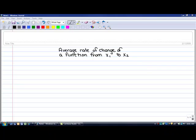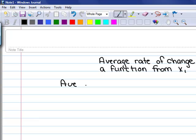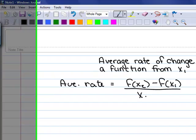This lesson is on the average rate of change of a function from x sub 1 to x sub 2. The average rate formula is really the slope formula, and it's f of x sub 2 minus f of x sub 1 divided by x sub 2 minus x sub 1.